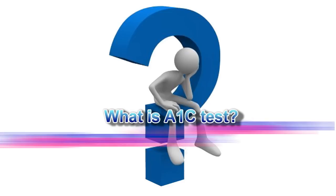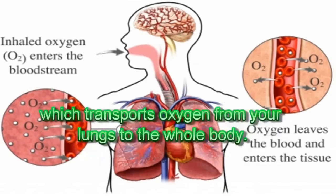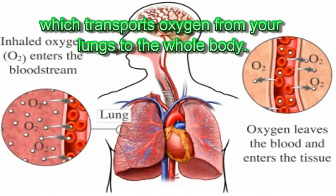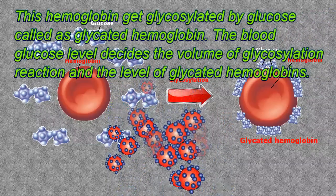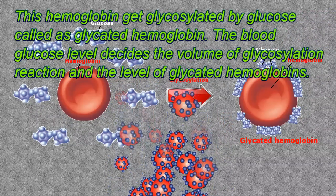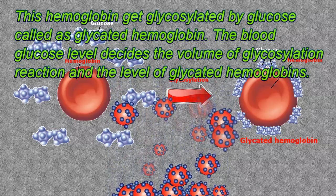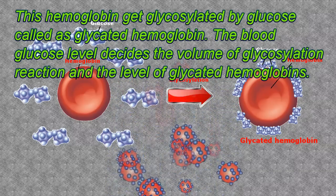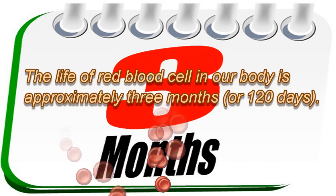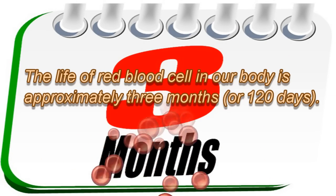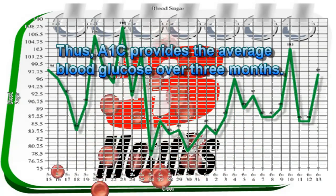What is A1c Test? Hemoglobin is a protein in the red blood cell which transports oxygen from your lungs to the whole body. This hemoglobin gets glycosylated by glucose, called glycated hemoglobin. The blood glucose level decides the volume of glycosylation reaction and the level of glycated hemoglobins. The life of a red blood cell in our body is approximately 3 months or 120 days, so A1c provides the average blood glucose over 3 months.